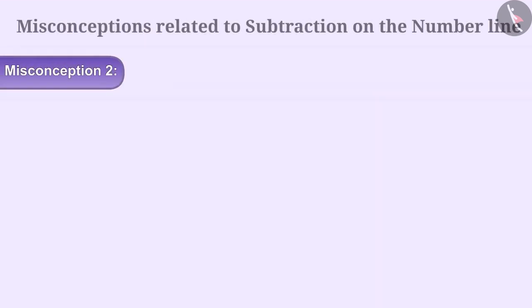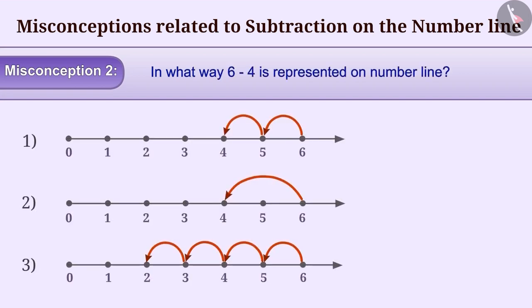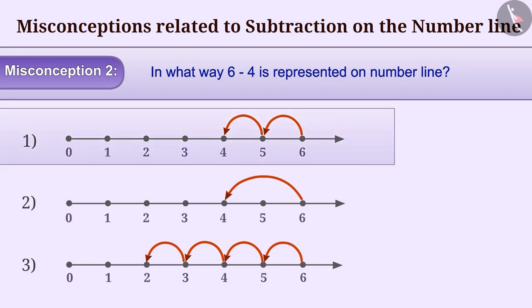Misconception 2: In what way is 6 minus 4 represented on the number line? While representing the subtraction of whole numbers on the number line, sometimes arrows are shown from 6 to 5 and 5 to 4. With this incorrect understanding, incorrect answer option 1 is chosen. Similarly, subtraction of 6 and 4 is often represented by a single arrow from 6 to 4.